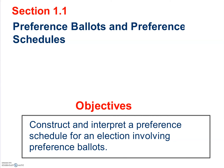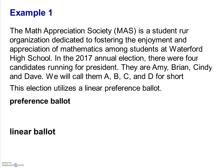We're starting to look at voting, and there are many different ways to take and count votes. All of our voting is going to involve preference ballots. In Example 1, the Math Appreciation Society is a student-run organization dedicated to fostering the enjoyment and appreciation of mathematics among Waterford High School students. In the 2017 annual election, there were four candidates running for president: Amy, Brian, Cindy, and Dave — candidates A, B, C, and D for short.